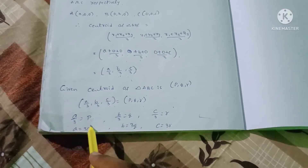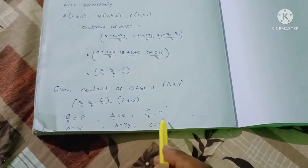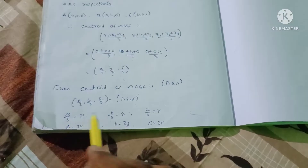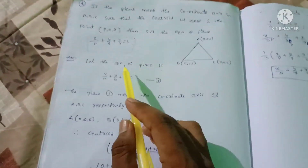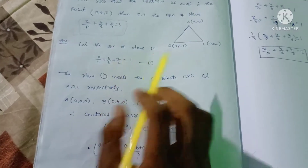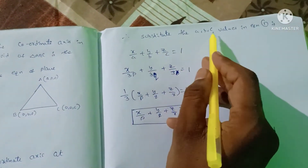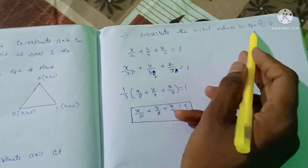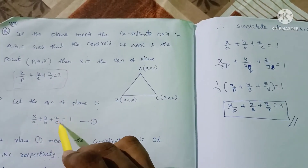Therefore a = 3p, b = 3q, c = 3r. We have the values of a, b, c, so we can substitute these values into equation 1, which is x/a + y/b + z/c = 1.